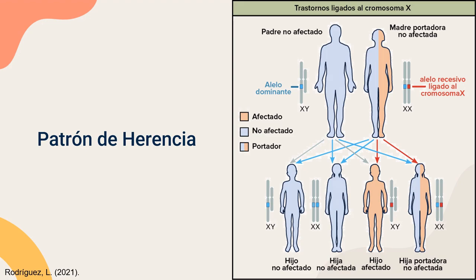El patrón de herencia es ligado al cromosoma X, lo cual quiere decir que el gen mutado se encuentra en el cromosoma X, uno de los cromosomas sexuales. Las mujeres cuentan con dos cromosomas X y los hombres con un cromosoma X y un cromosoma Y. Por lo tanto, como el cromosoma X solo es uno en el hombre, si este está afectado, automáticamente el hombre presenta la enfermedad. Mientras que en las mujeres, la mutación debería estar en ambos cromosomas X para que presenten la enfermedad, lo cual sería muy difícil, por eso la mayoría de afectados son hombres.